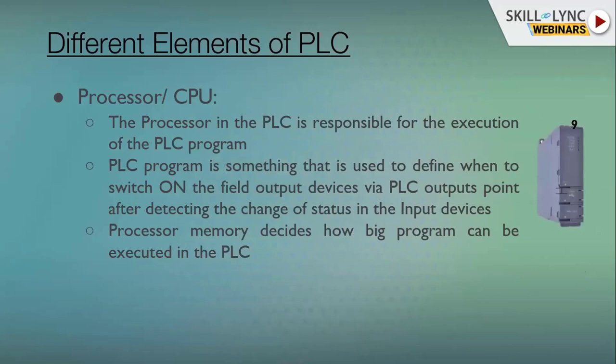The processor can be known as the brain of the entire system. It decides the process according to the program we feed into it, switching on or switching off field devices to run the operation. The processor has memory, which determines how large our program can be, how many inputs and outputs can be stored in memory files, and how many other instructions can be used in the PLC program.